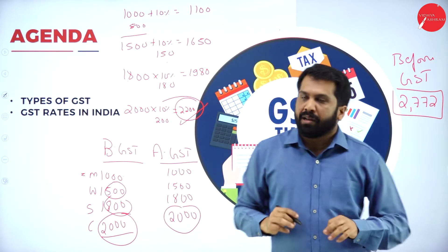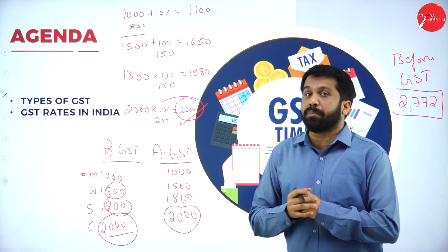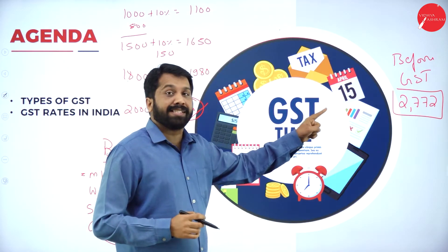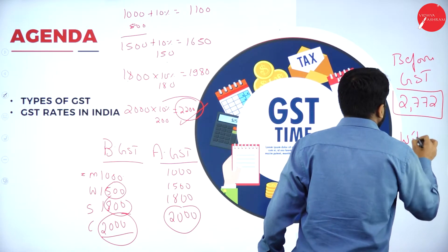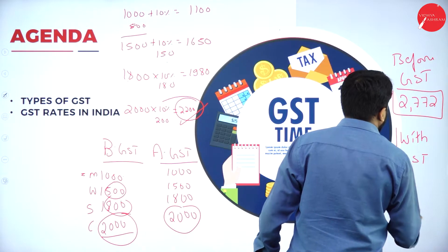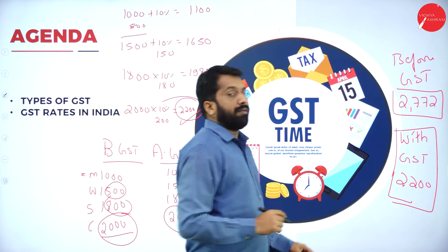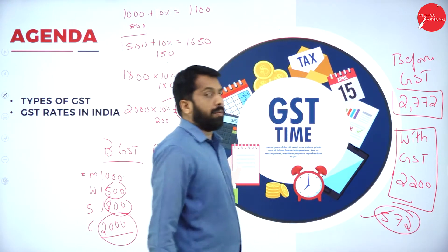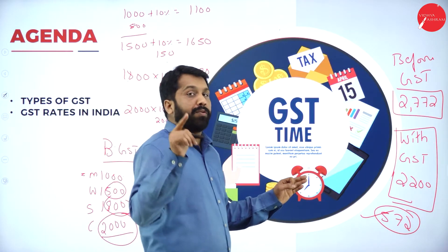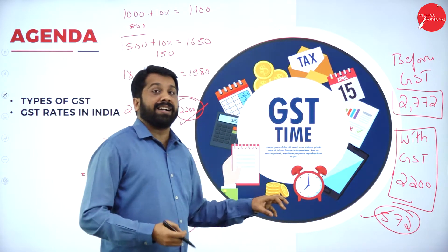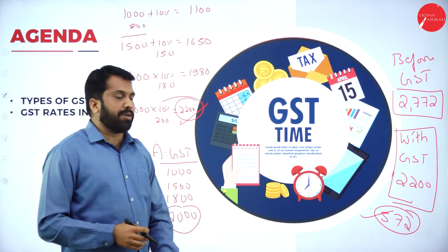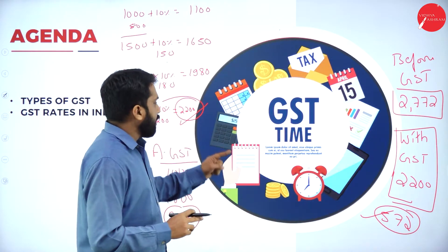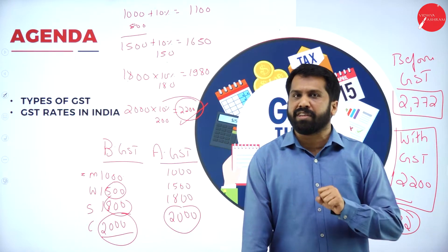With GST, the product price at the end is 2,200. Before GST it was 2,772. We were paying almost 572 rupees extra. With the help of GST, we have saved 572 rupees — that is the advantage of GST. This is a recap of the calculations done in the previous session.